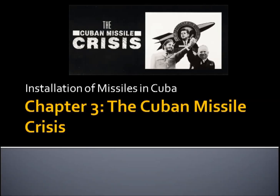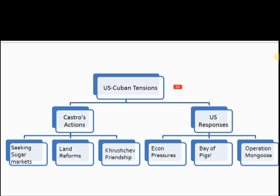Hi everyone, today we'll be carrying on with our lessons on the Cuban Missile Crisis. Previously, you would recall that we looked at what led to the worsening tensions between the US and Cuba. We learned about the background for both sides, which had laid the foundation for the tensions once Cuba's original leader Fulgencio Batista was replaced by Castro, and how subsequently Castro's actions served to provoke the US and make the US more suspicious of Cuba's intents.